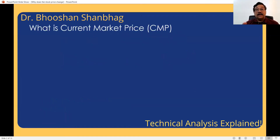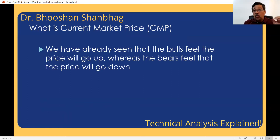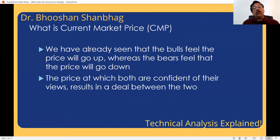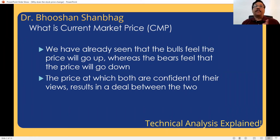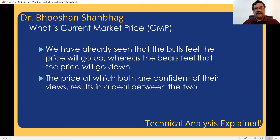Whenever we are talking of price, current market price is a very commonly used term. We have already seen who are bulls and who are buyers. Bulls are those who are expecting the prices to go up. Bears are those who want the prices to go down. The price at which both are confident that their view is correct — bull wants to buy, he has placed a buy order; bear wants to sell, he has placed a sell order. When bull is confident the price will go up and bear is confident the price will go down, bull buys the shares and bear sells the shares at that price. A deal is struck. Whatever is the latest price at which the deal is being struck, that is called current market price, CMP — last traded price.